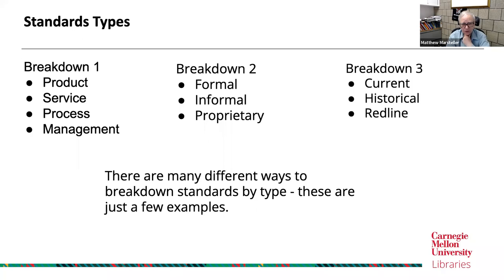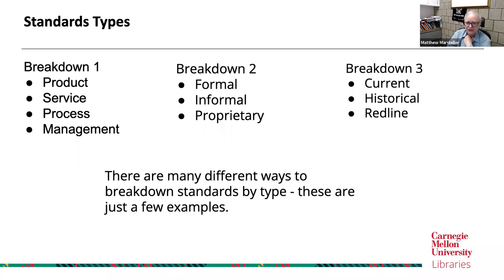Standards could also be a formal standard, blessed off by some organization like the American National Standards Institute. They could be an informal standard — we often call that de facto, something that becomes so common everybody does it. It could be a proprietary standard, something that is a particular way a company produces a product. In that case, rather than sharing that standard, they might have technical specifications they're willing to share with clients.